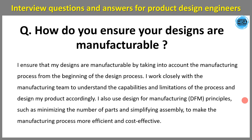Next question: how do you ensure your designs are manufacturable? You can answer: I ensure my designs are manufacturable by taking into account the manufacturing process from the beginning. I work closely with the manufacturing team to understand the capabilities and limitations of the process. I also use Design for Manufacturing (DFM) principles, such as minimizing the number of parts and simplifying assembly, to make the manufacturing process more efficient and cost effective.